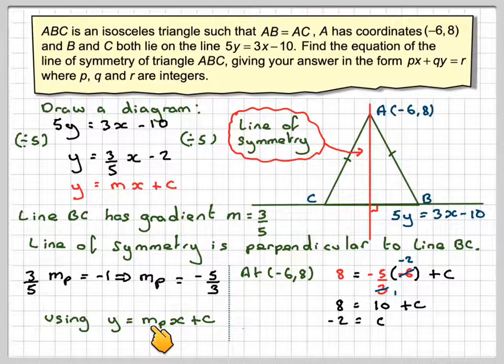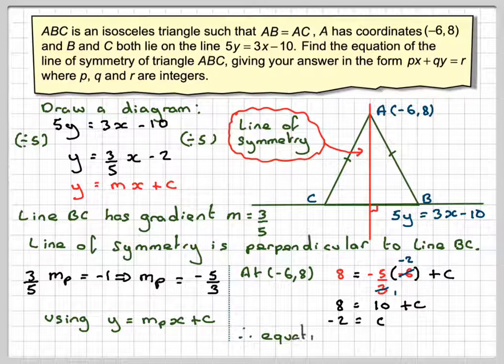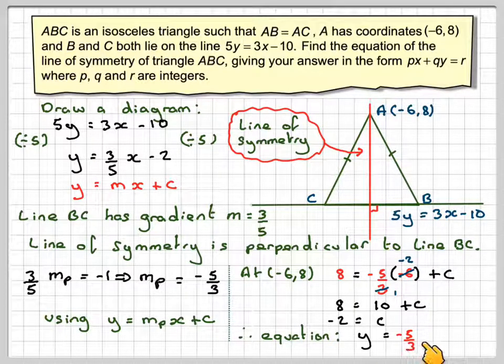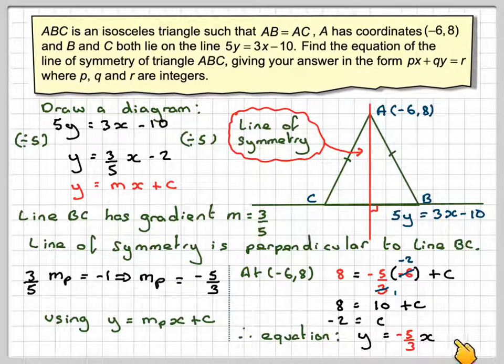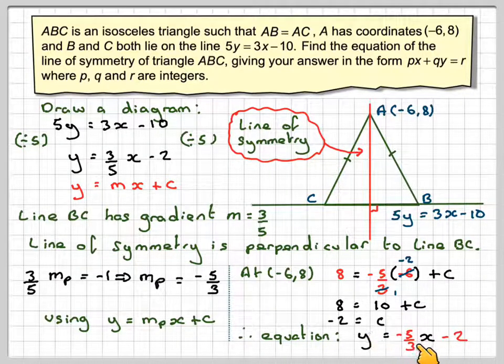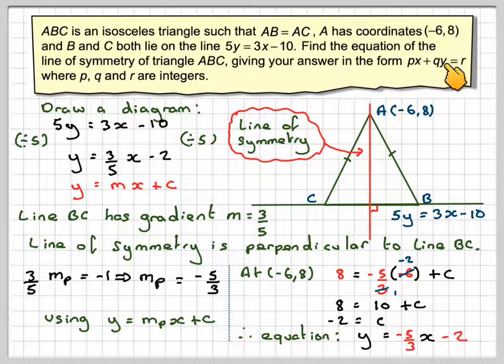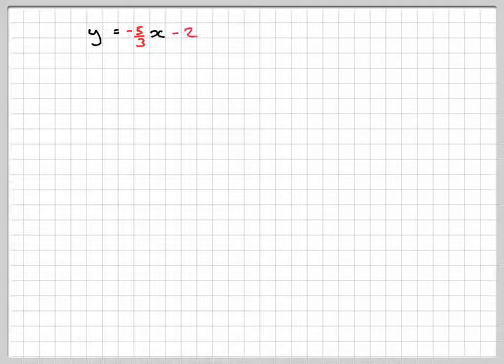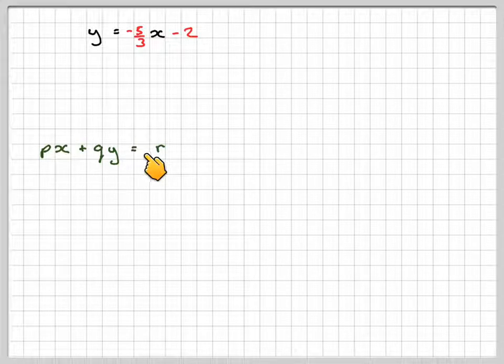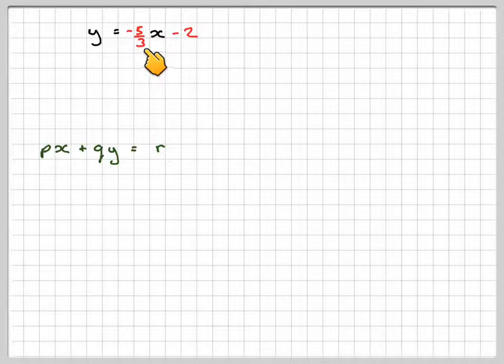Putting it all back together, our equation will be Y = (-5/3)X + (-2), which is Y = (-5/3)X - 2. This is the actual answer, but not in the correct format. We're heading for PX + QY = R. Thing is here, P, Q and R have to be integers.